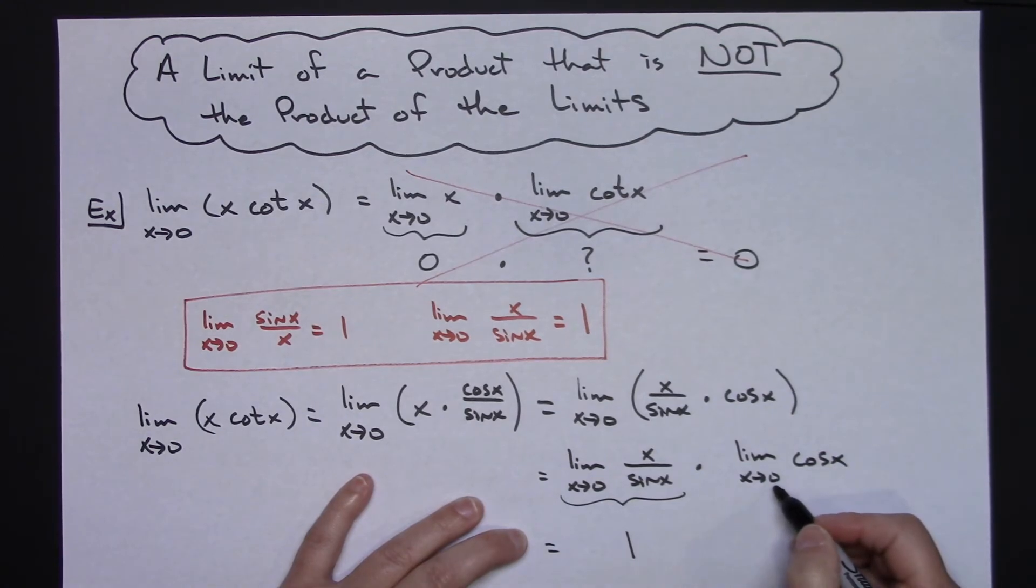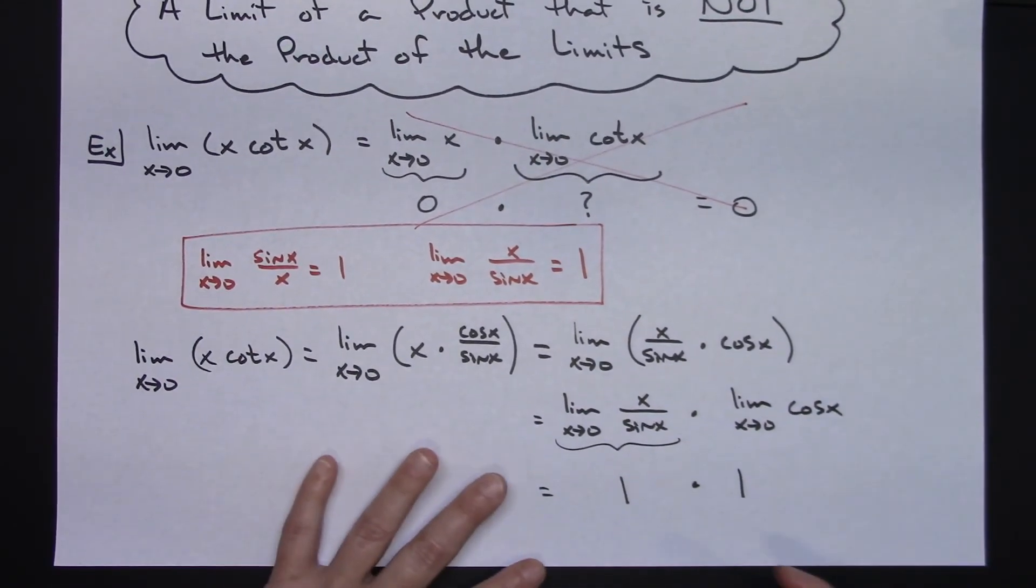This one I know automatically goes to 1. On this one, direct substitution. Plug in a 0. Cosine 0 is 1. And then 1 times 1 is going to give me an overall limit of 1.